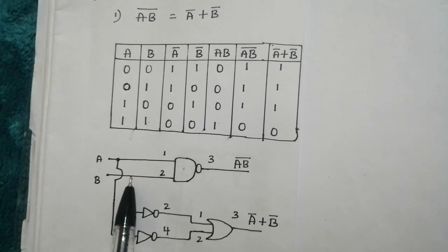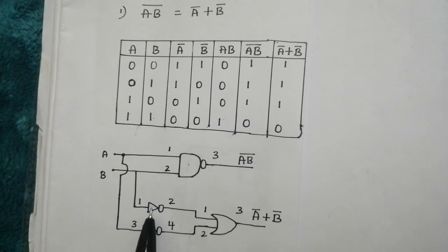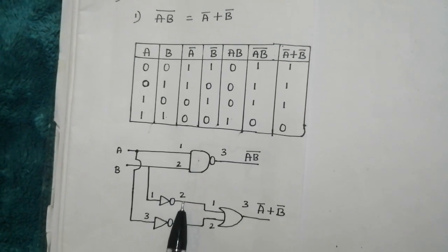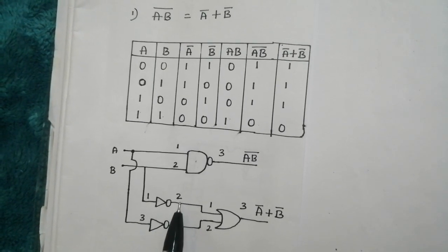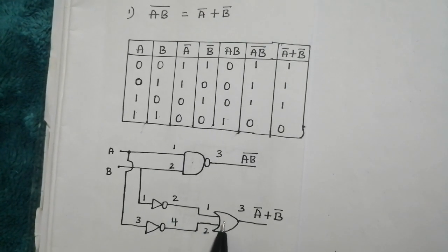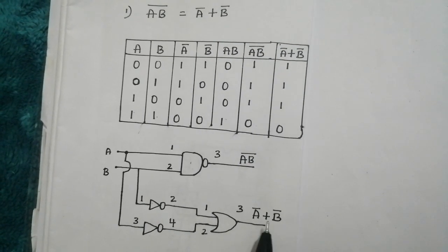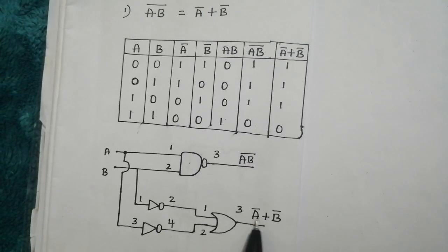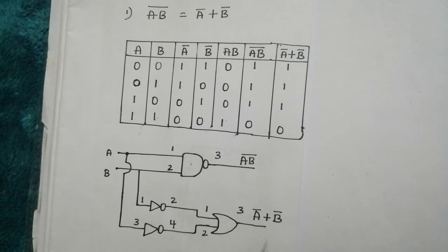Next, take the connection from input B and give it to the NOT logic gate. At this point I will get B bar. Next, once A bar and B bar is ready, by using OR logic gate I can obtain the output as A bar logical OR operation with B bar.